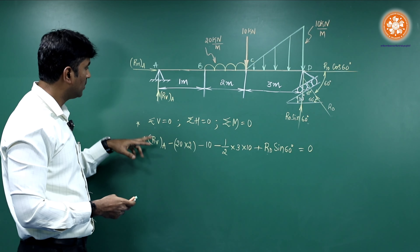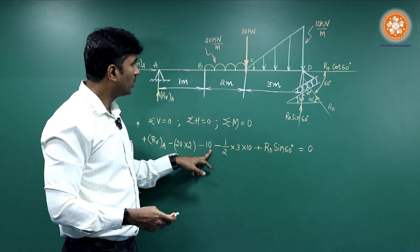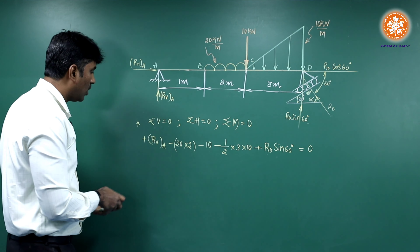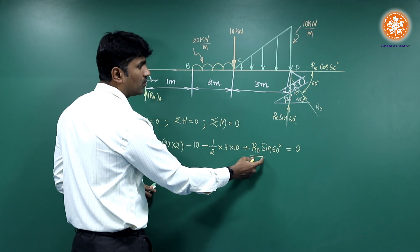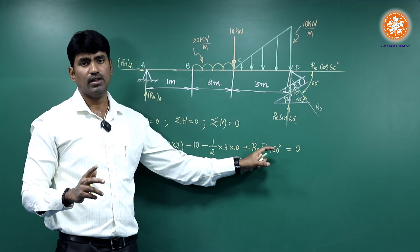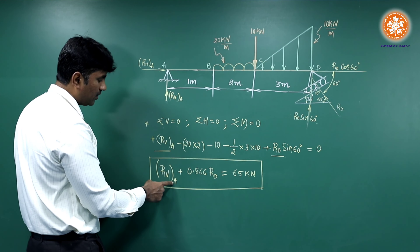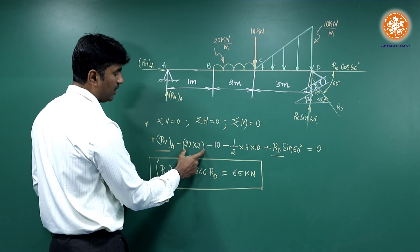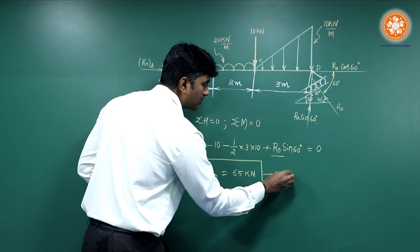Cross-check once — this is the most important step. We have the vertical reaction at A, the UDL load, the point load, the triangular load, and the reaction component Rd sin 60. We have two unknowns: Rv at point A and Rd. On simplification, we have Rv_A plus 0.866 Rd equals the sum of downward loads. Call this Equation 1.